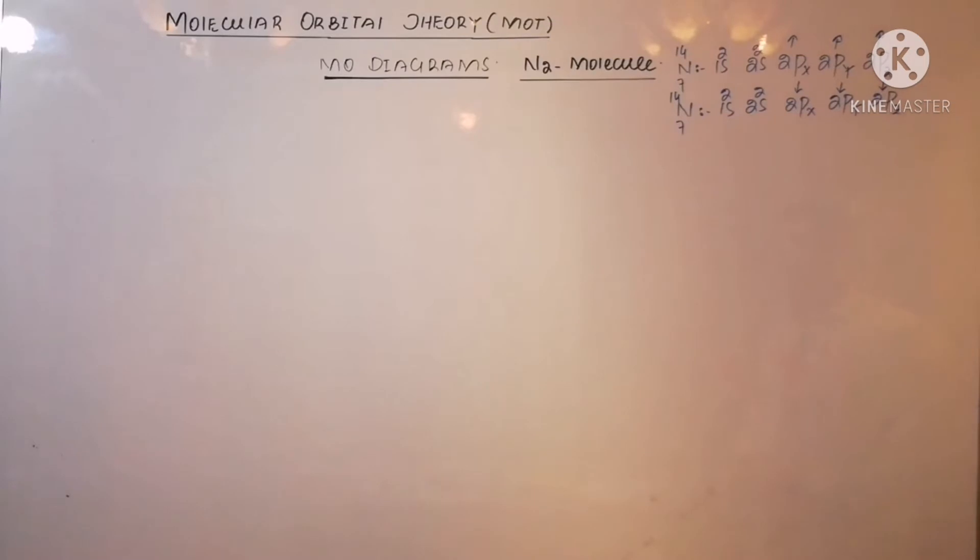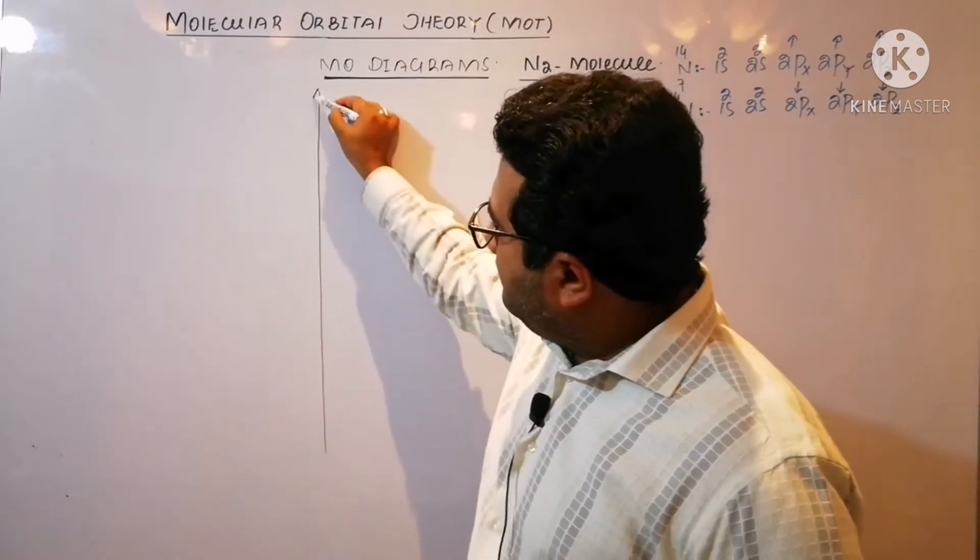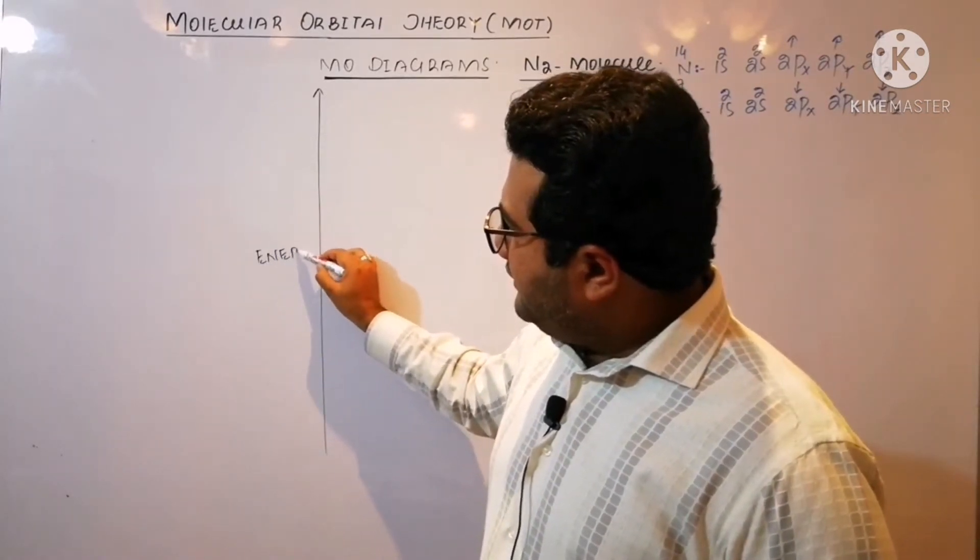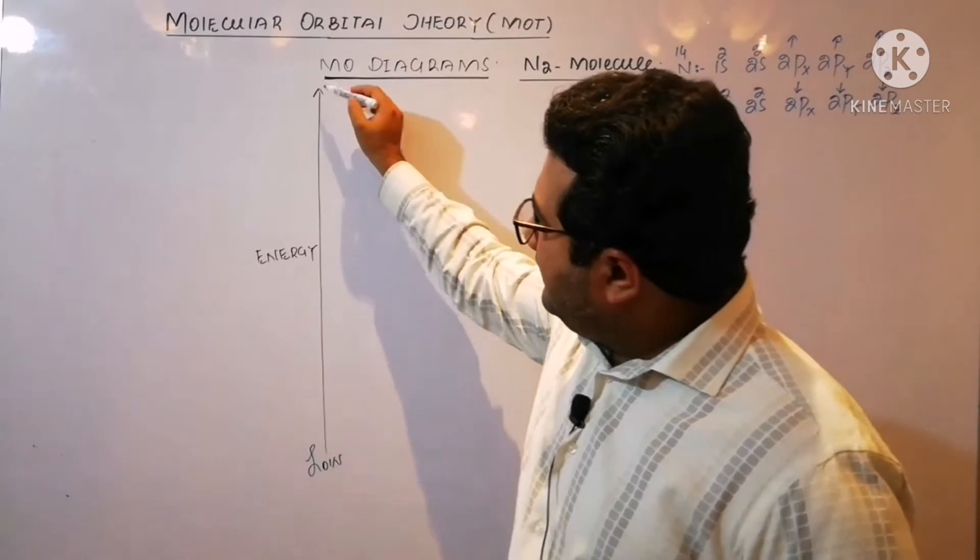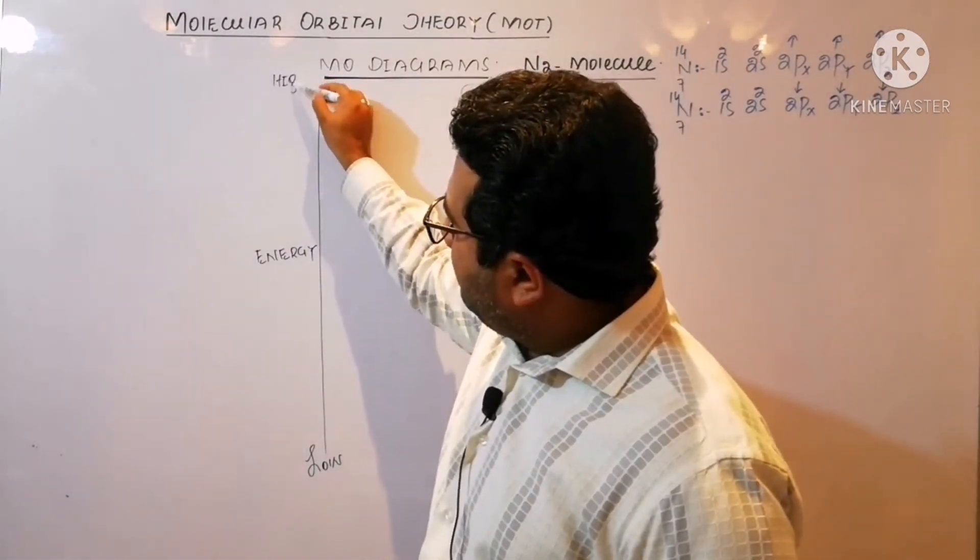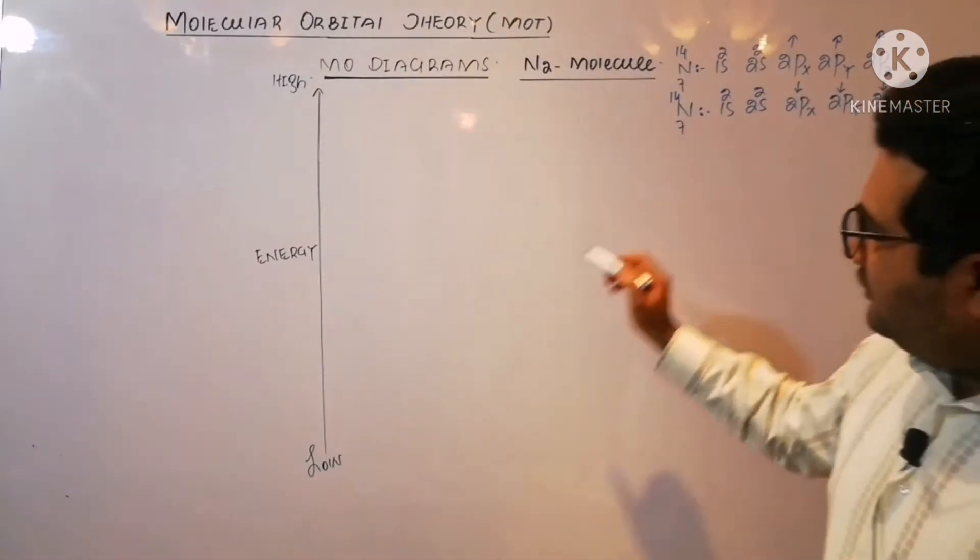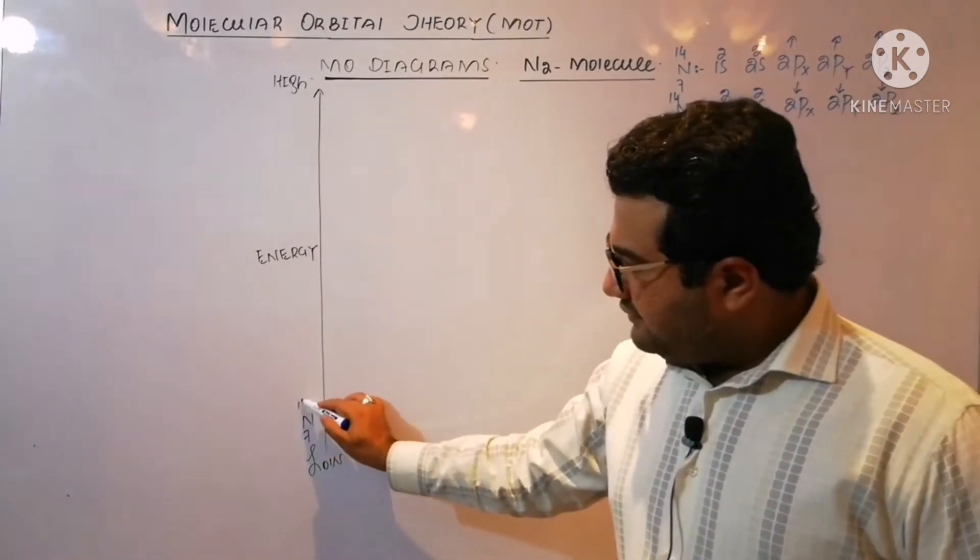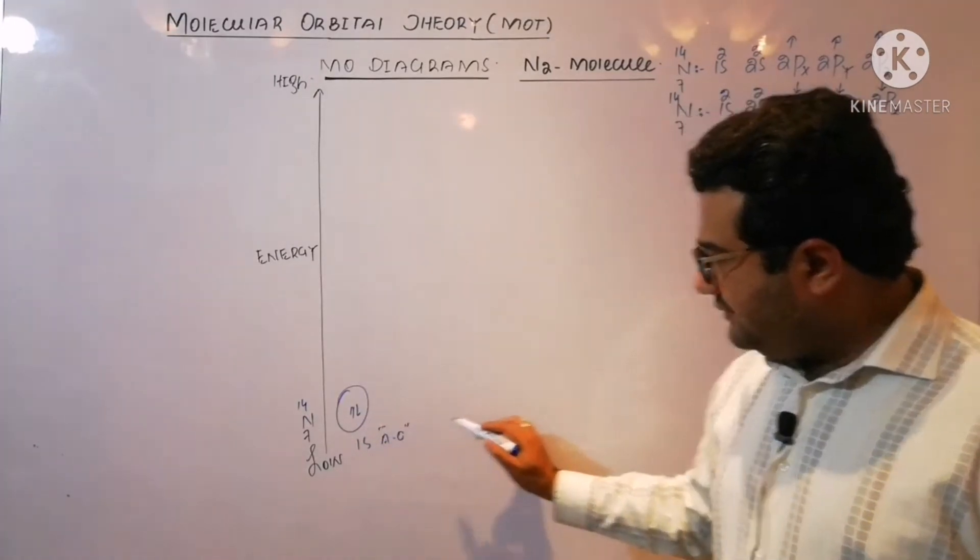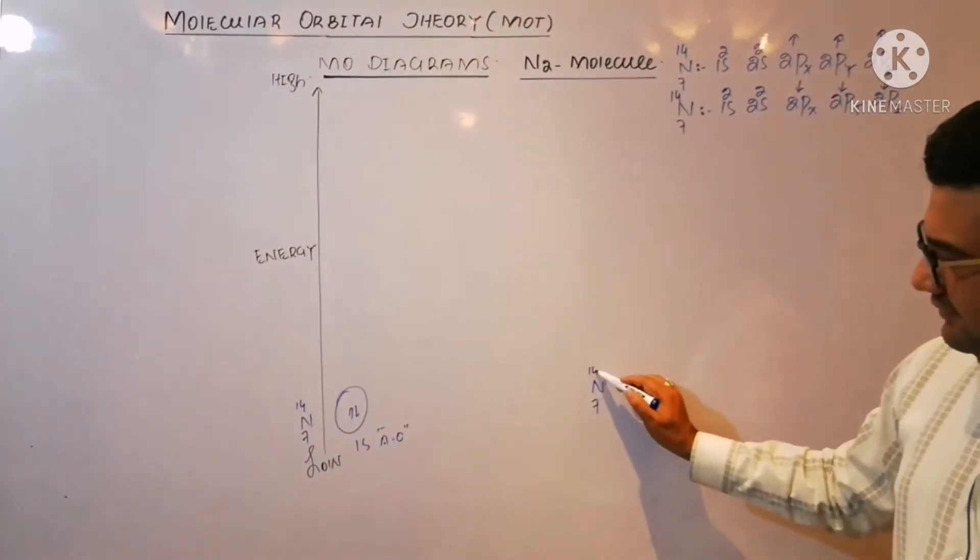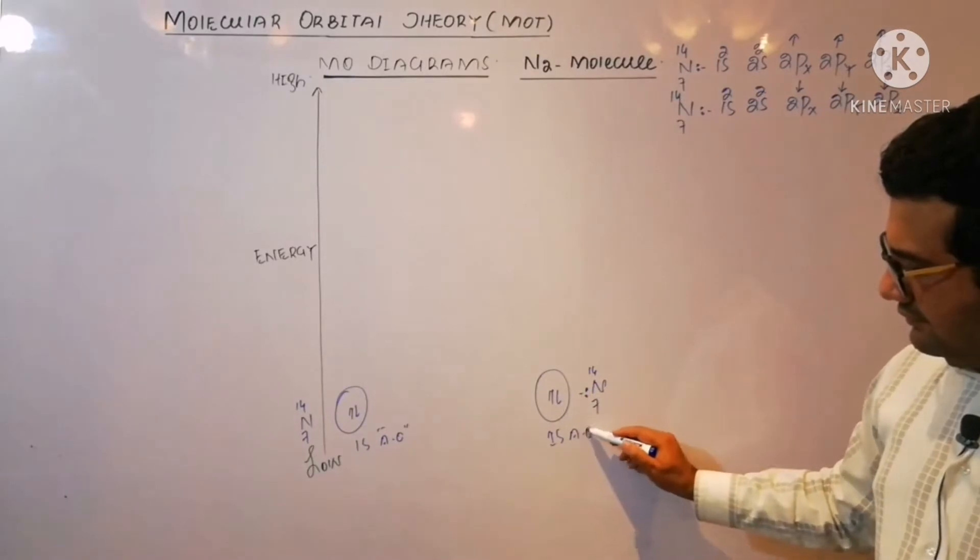This one again we will draw the energy axis. Here is the low energy and here will be the high energy. Now, 1s² atomic orbital, 1s² atomic orbital.